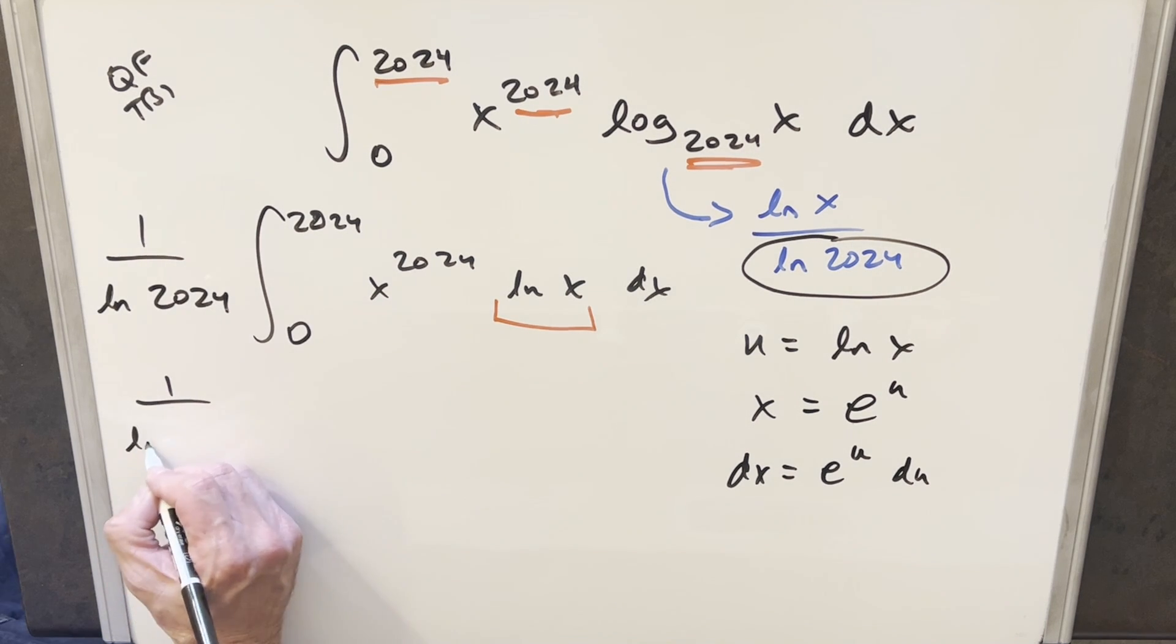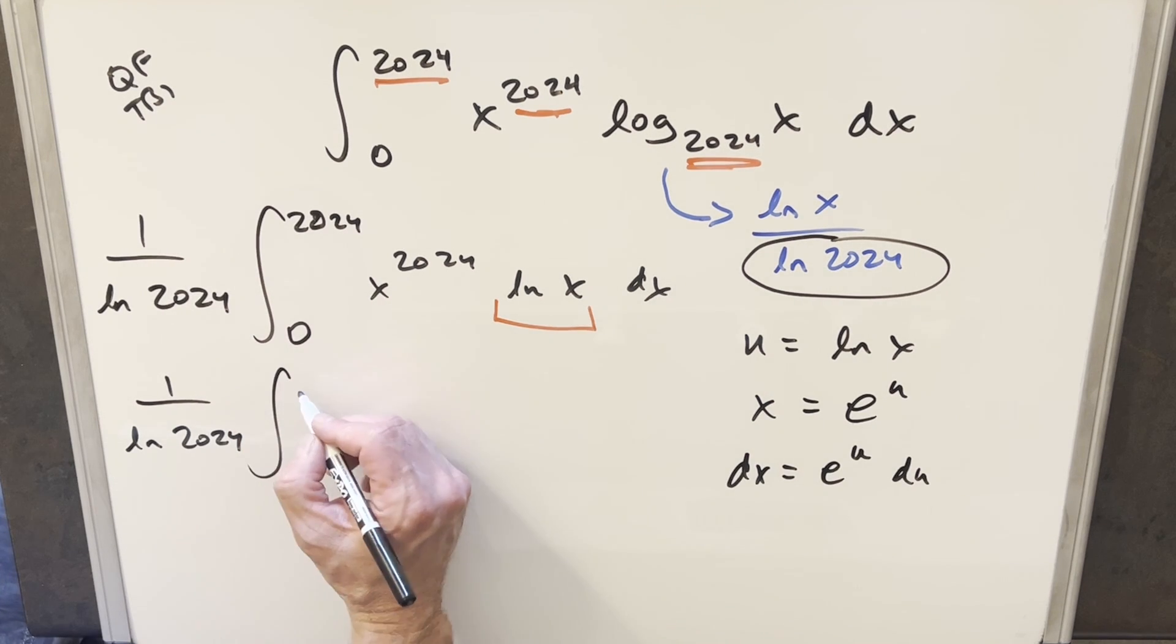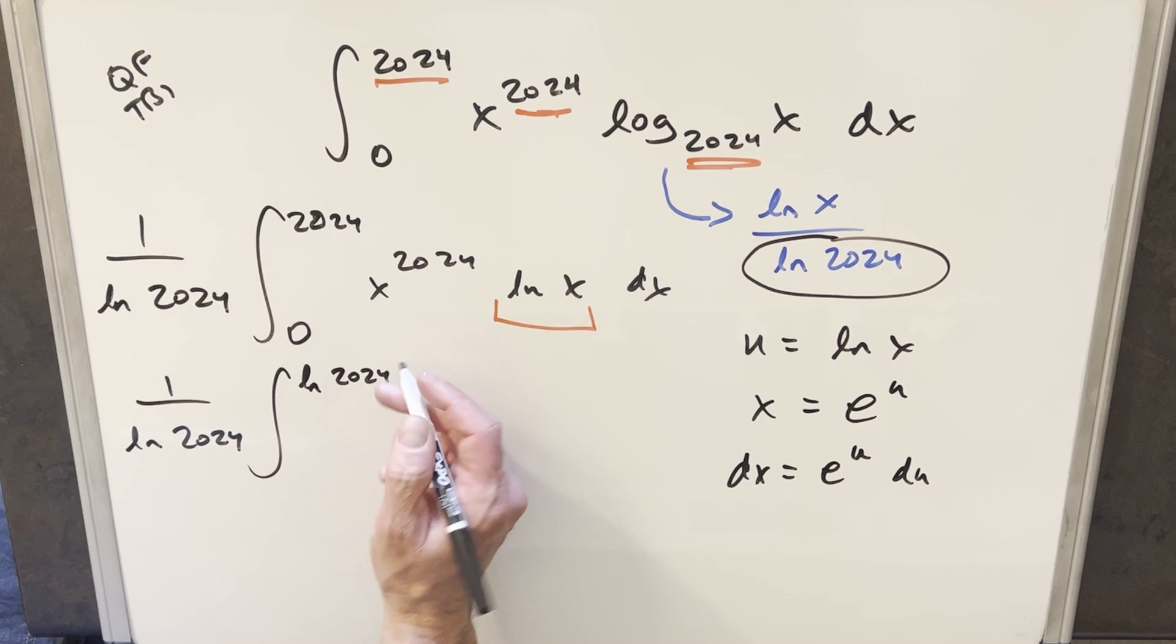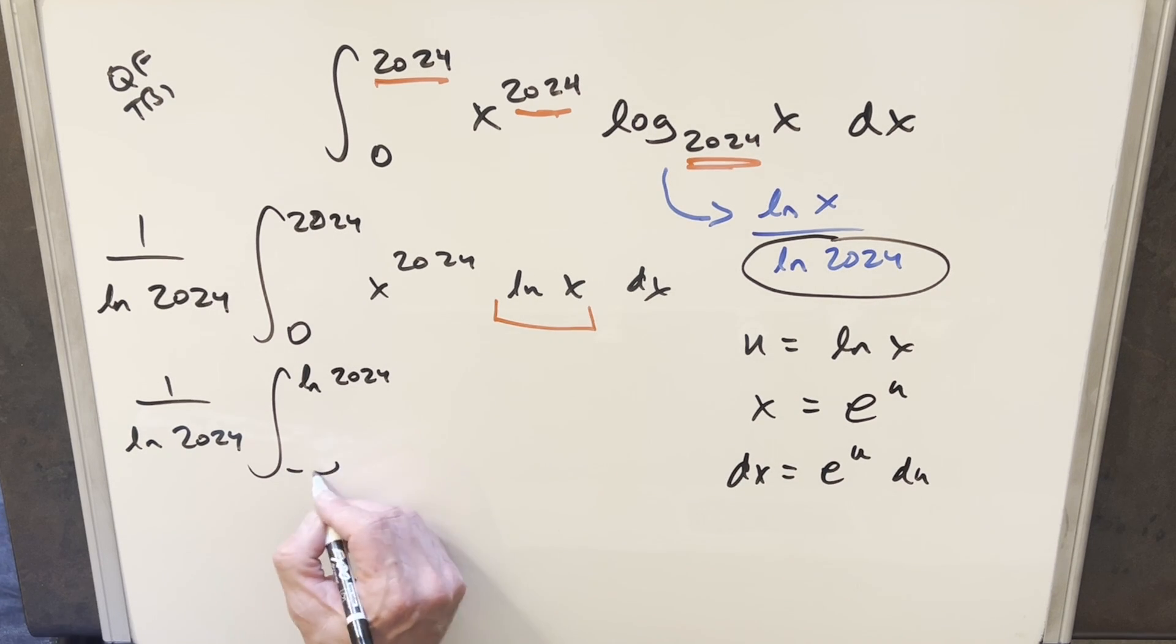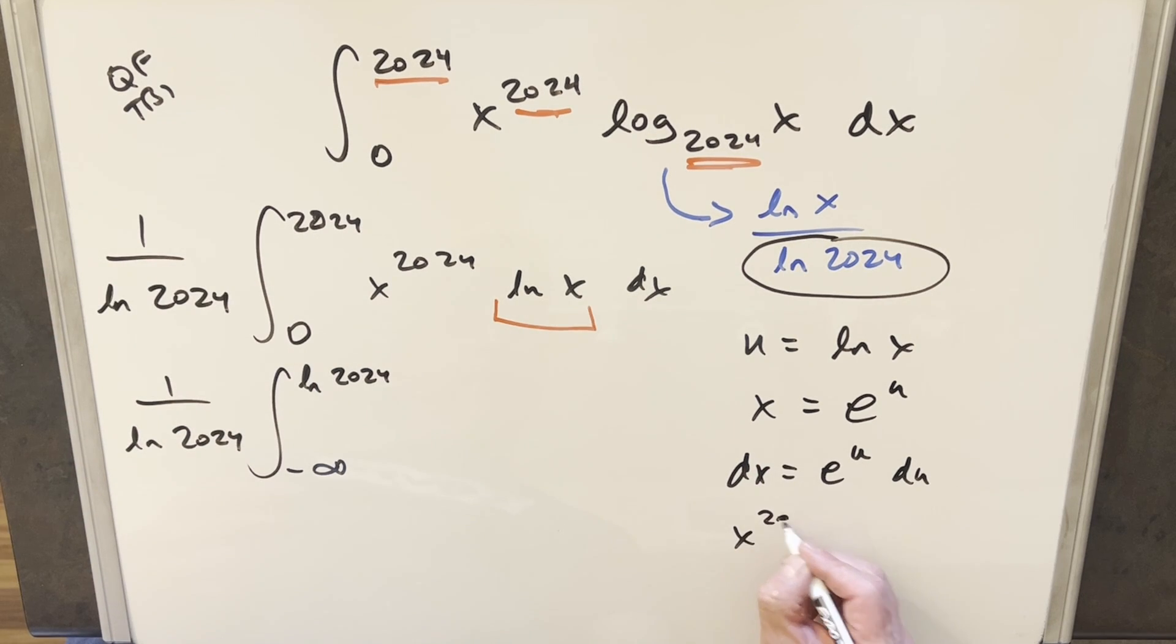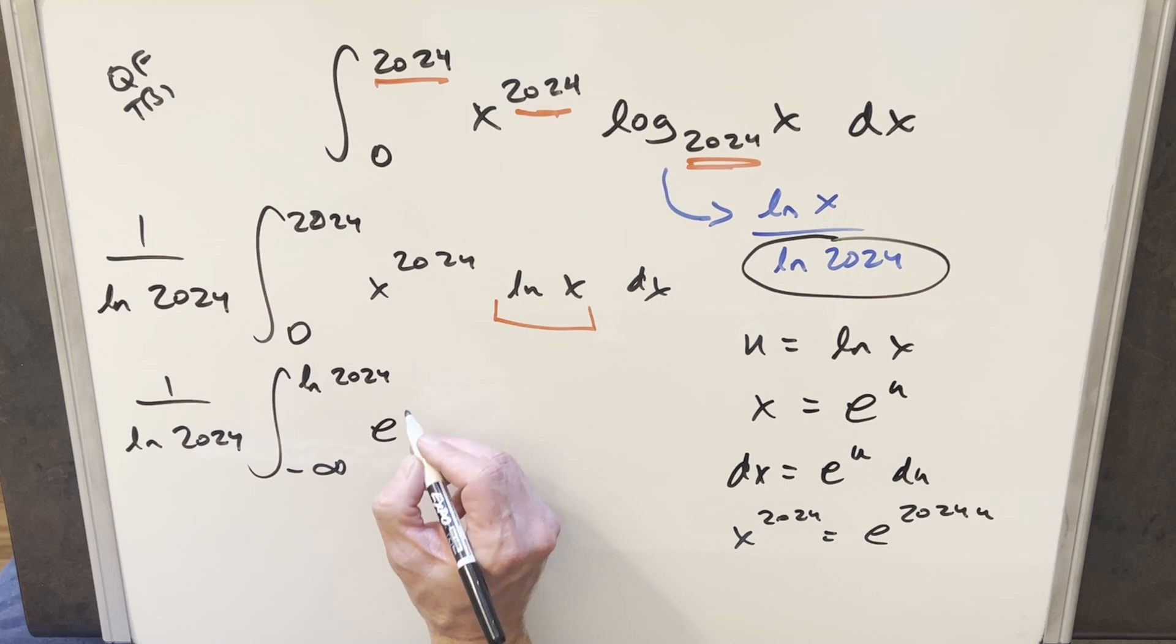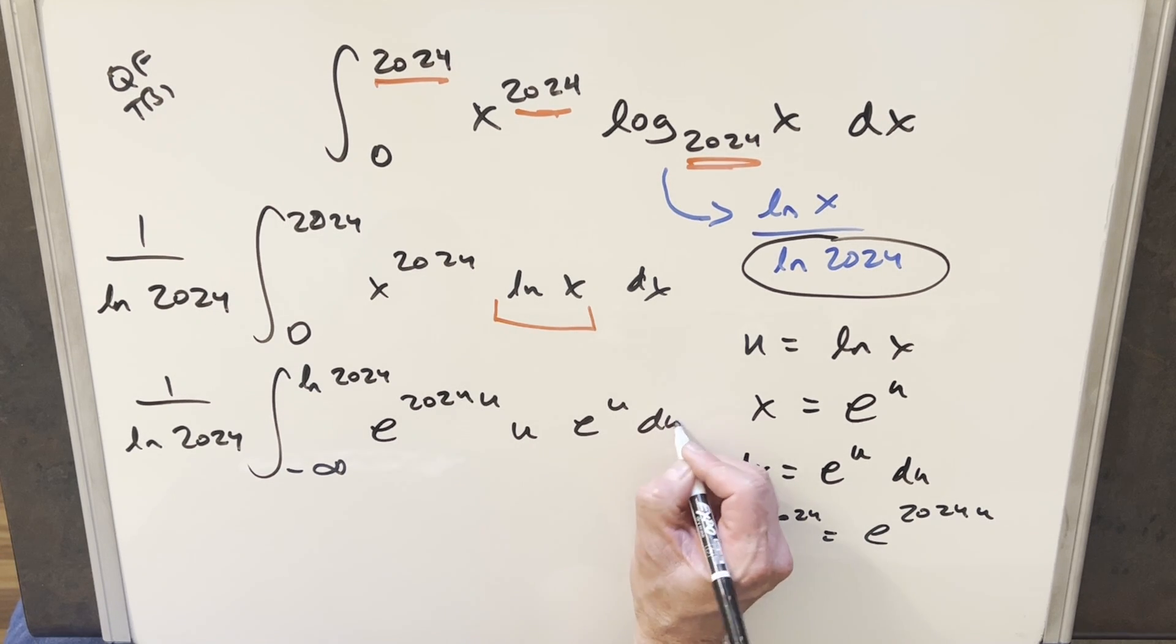So then let's just substitute. We'll have this up front. Now for our bounds, we plug 2024 in here. So our upper bound is going to become natural log 2024. And then we plug 0 and natural log of 0, that's going to be like when we are at minus infinity here. Then for x to the 2024, just taking the 2024 power on both sides, this becomes e to the 2024 u. So we'll bring that over here. Here's our u value and our dx is just going to be e to the u du.